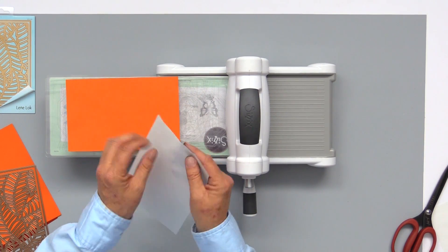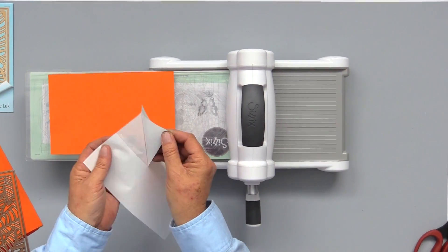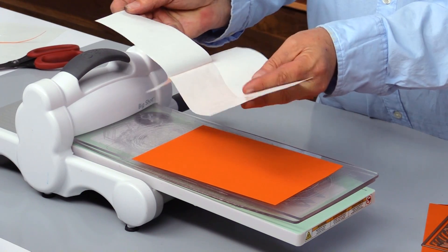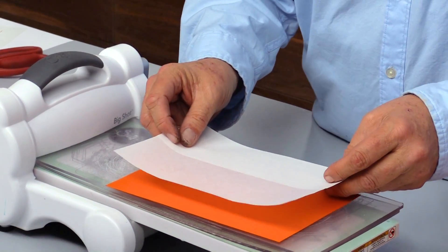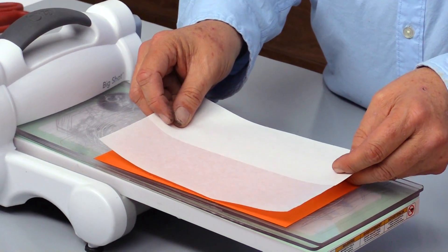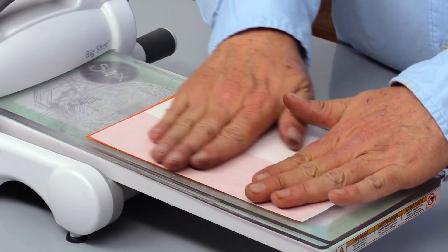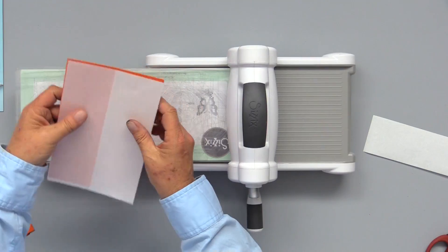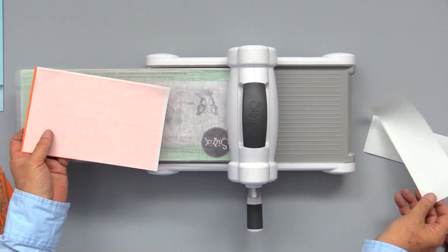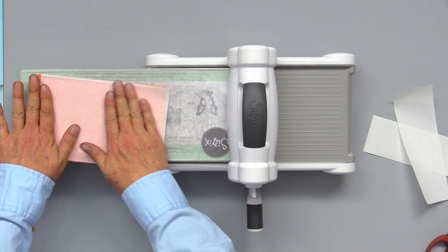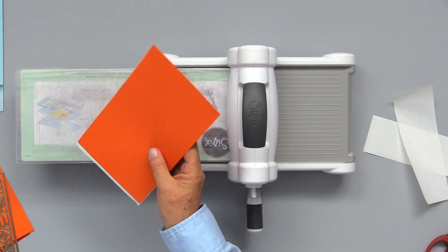This has a little place where you can remove this release liner, and that reveals the adhesive that's on that sheet. Turn that over, apply it to your cardstock, press it down, and remove this other piece of the release liner. And now this piece of cardstock has adhesive on the back side.